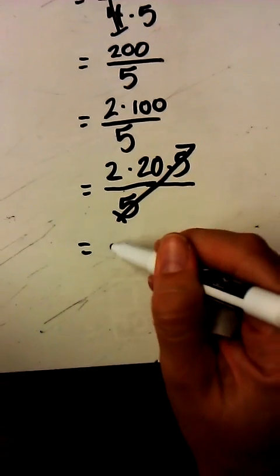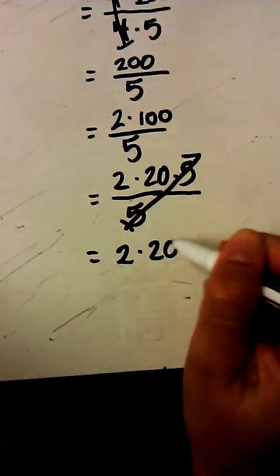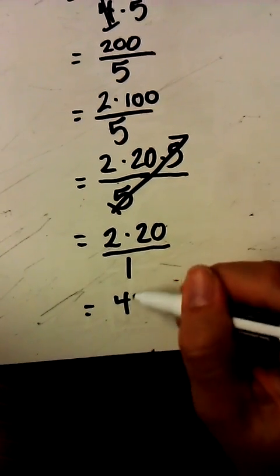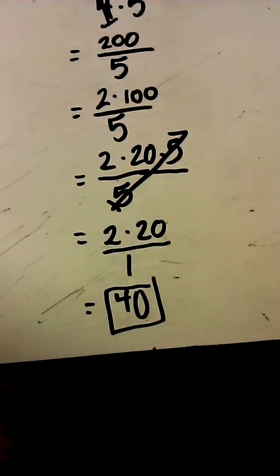So I have 2 times 20 times 1 over 1. Well 2 times 20 is 40 and over 1 makes it 40 whole.